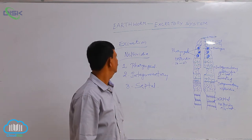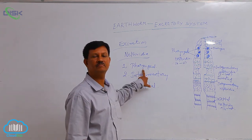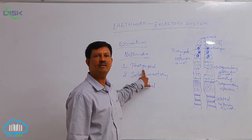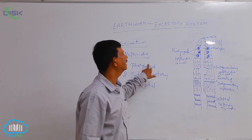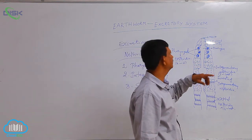We will discuss each type one by one. First, pharyngeal nephridia. These nephridia are present near the pharynx, hence they are known as pharyngeal nephridia.